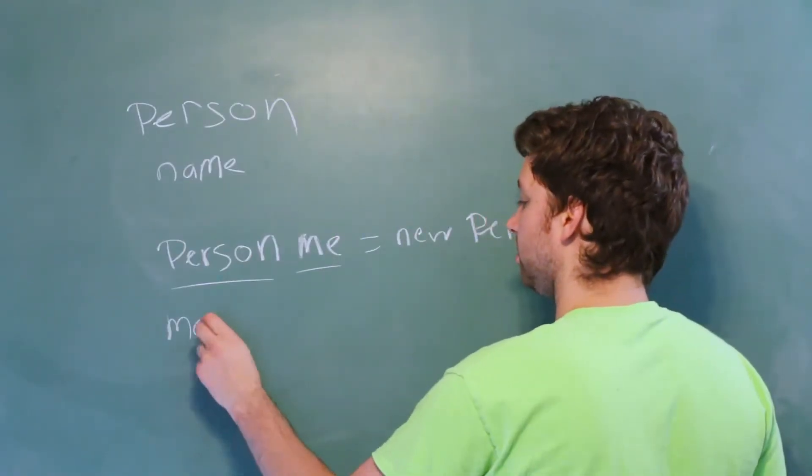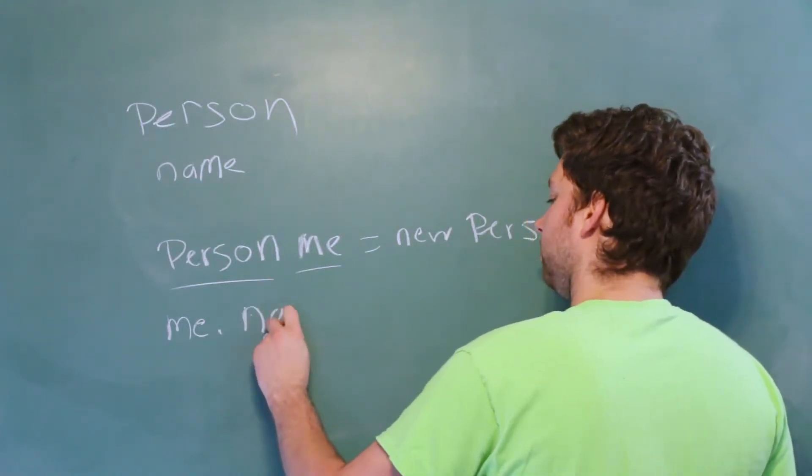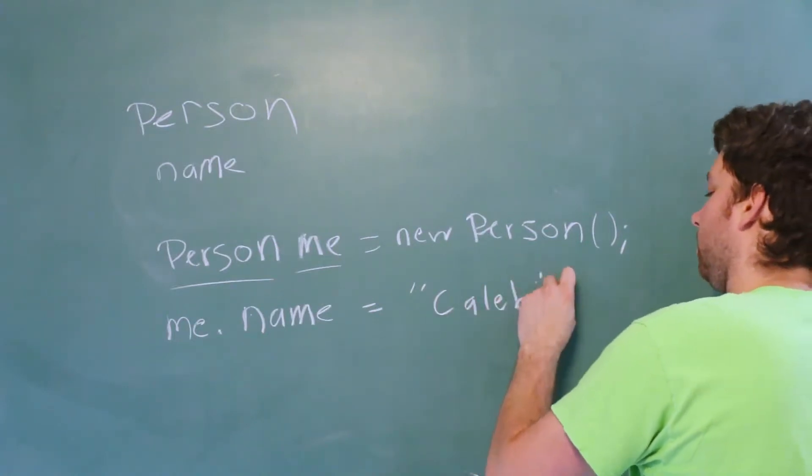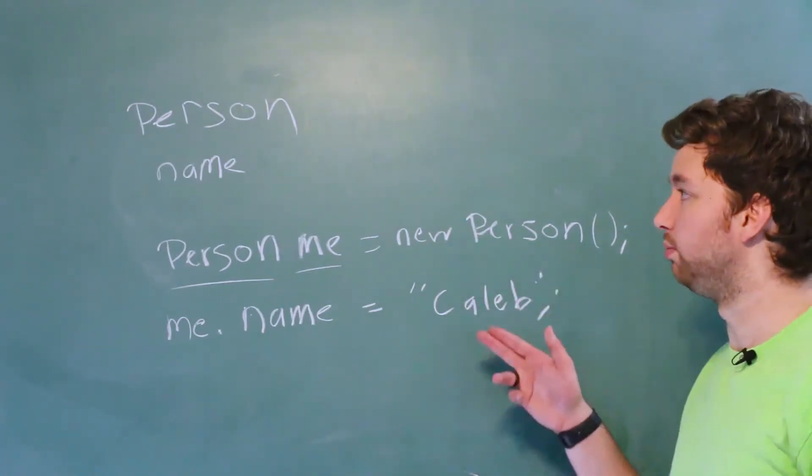To reference this name, all you do is say me dot name and we can assign it a value such as Caleb. So that is how we would use a public field.